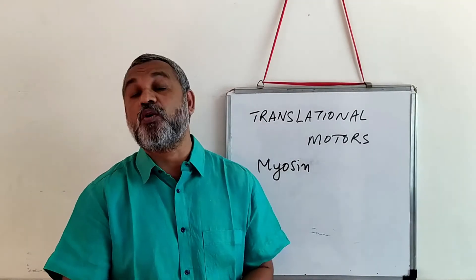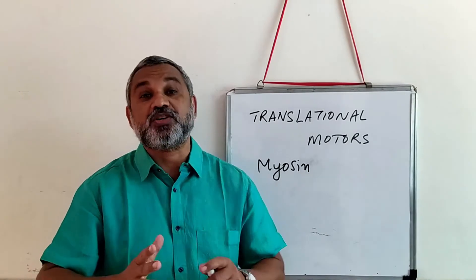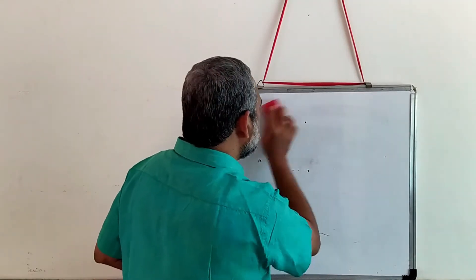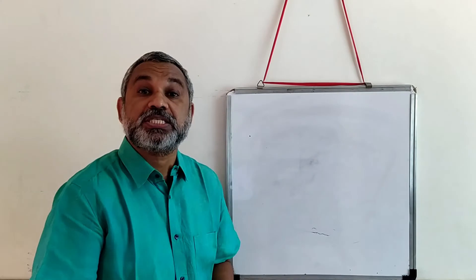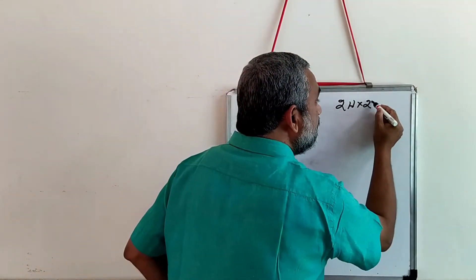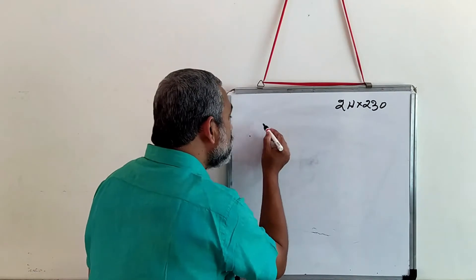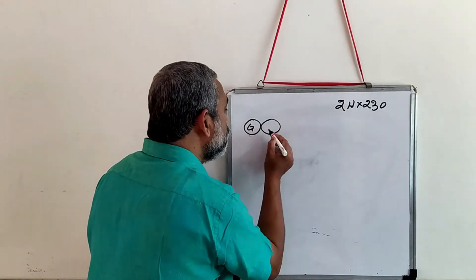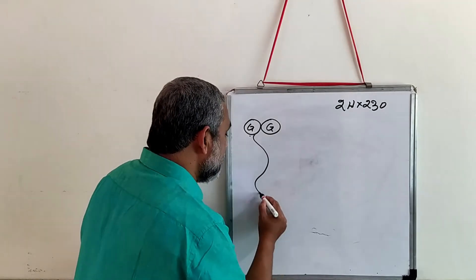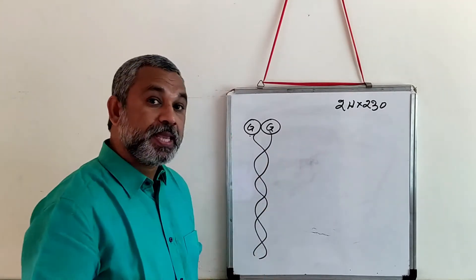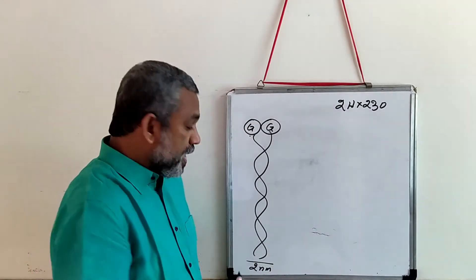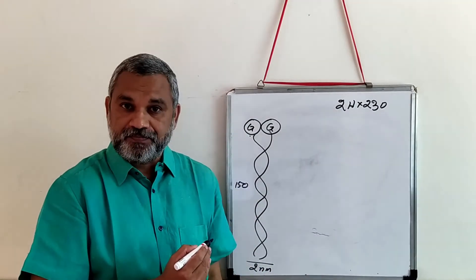Myosin is an excellent example of a translational motor. Let us look at the structure of myosin — it is a very large protein. It has got two heavy chains, and the molecular weight of the two heavy chains is about 230 kilodaltons. It has a globular head — there are two globular heads — followed by a very long fibrous alpha-helical structure. The diameter of this helical structure is about 2 nanometers and the length is about 150 nanometers.